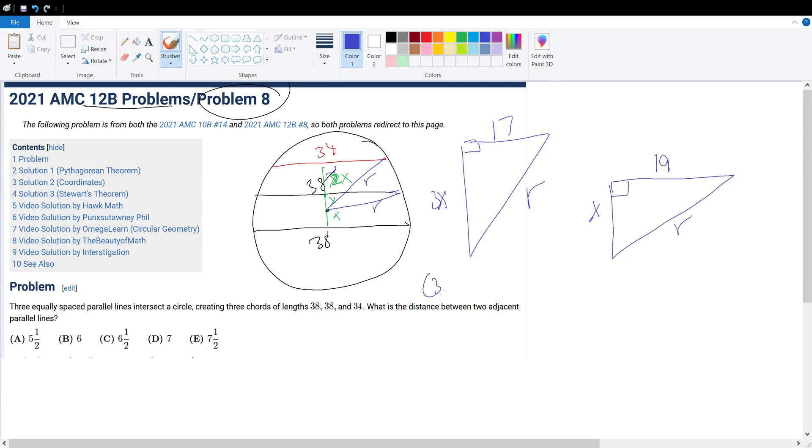So we see that 3x squared plus 17 squared equals r squared, and r squared equals x squared plus 19 squared. So just Pythagorean theorem on both triangles and setting the equations equal to each other.